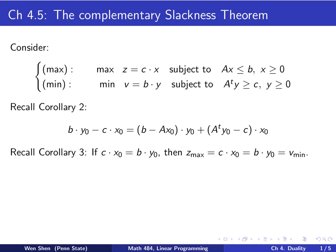Let's recall another corollary, number 3. It says: if, for two feasible solutions x0 and y0, we also have c dot x0 equal to b dot y0, then these two are optimal points of each of the max and min problems, and the max value of z would be c dot x0 and the minimum value of v will be b dot y0, and they're equal to each other.